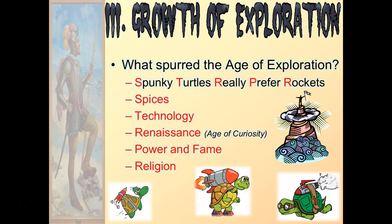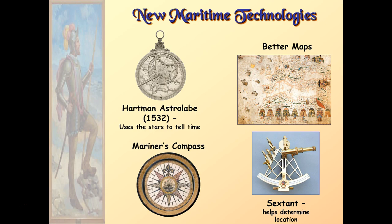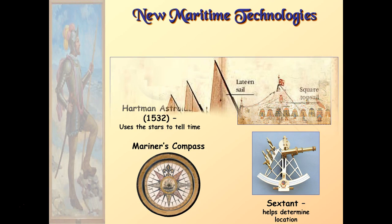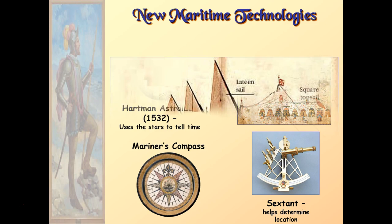Now let's look at some of the technology that would allow for exploration. We have the astrolabe, which allowed explorers to use the stars to tell time. Better maps gave you an idea of where you're going, and people would begin to map places they had been. The compass and sextant help determine location. And here's a pretty impressive one — a ship known as the Caravel, which was able to sail against the winds, meaning people could actually cross the Atlantic to get to the New World because of these impressive new ships.